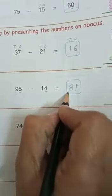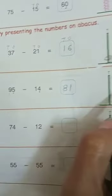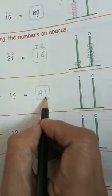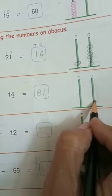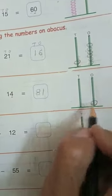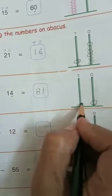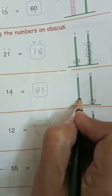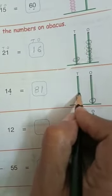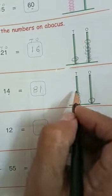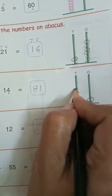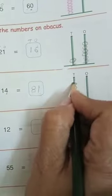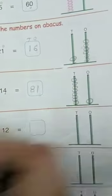Now we will show this answer on this abacus. 1 one: 1. And 8 tens: 1, 2, 3, 4, 5, 6, 7, 8.